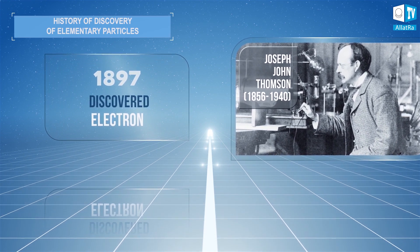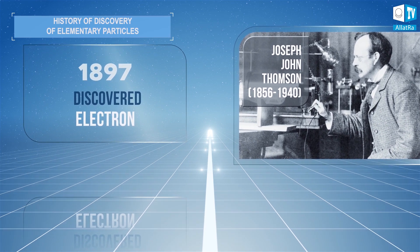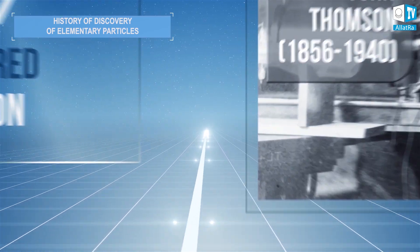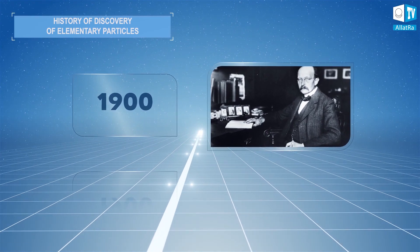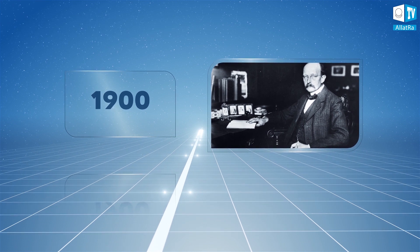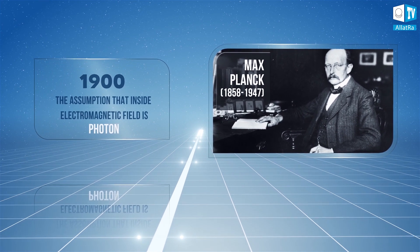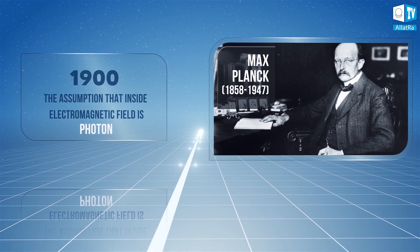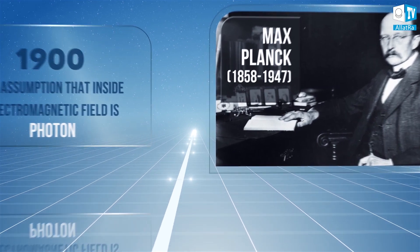A carrier of negative elementary electric charge in atoms, the assumption that inside the electromagnetic field there is a photon was made in 1900 in the works of German physicist-theorist, founder of quantum physics, Max Planck.